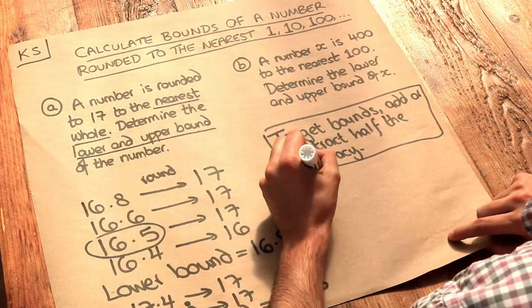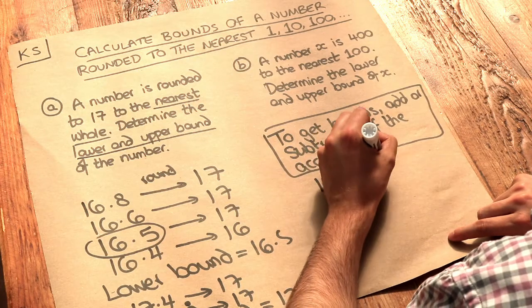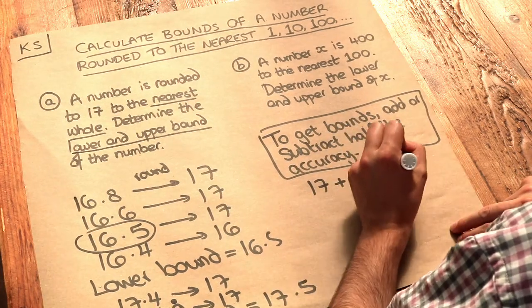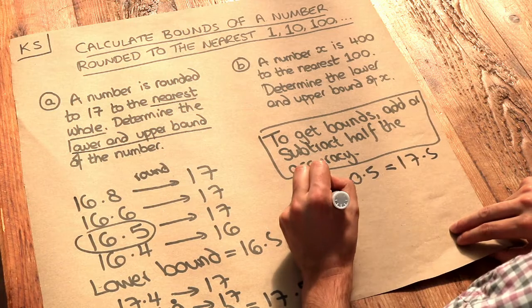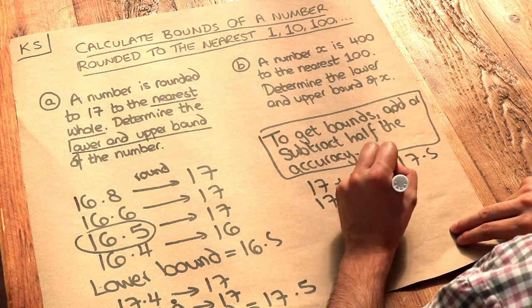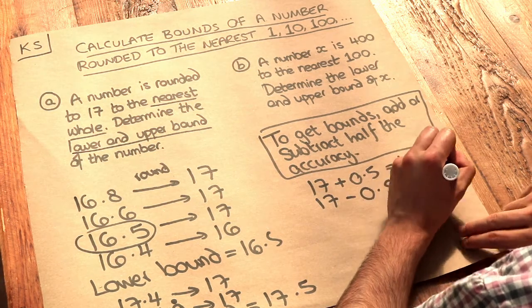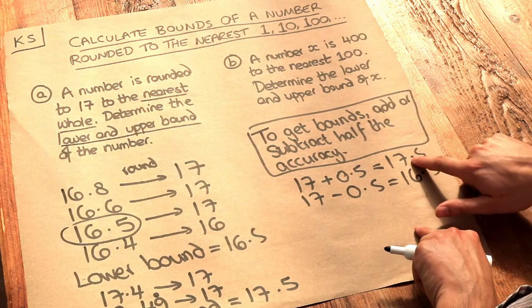Now if we do that number 17 plus half the accuracy of a whole, that gives us 17.5. And if we subtract half the accuracy, then we get 16.5. And there, look, this is our lower bound, and this is our upper bound.